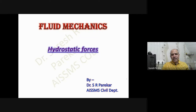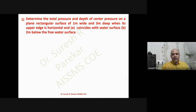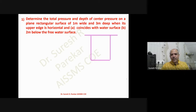We will see some problems for the first two cases. We have to determine the total pressure and depth of center of pressure on a plane rectangular surface of one meter wide and three meter deep. Its upper edge is horizontal and coincides with water — part A coincides with water, part B is two meters below the free surface. For the first case, this coincides with water, with three meter depth and one meter width.